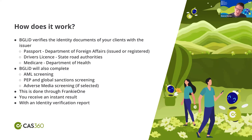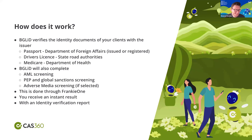BGL-ID goes a little bit further than that, because we've added extra checks that are part of the product. BGL-ID also includes AML screening — we check the AML database to see if there have been any anti-money laundering cases or findings against that particular person. We also do a PEP check (politically exposed persons) and global sanctions as well. So we are doing an AML, PEP and global sanctions screening on each person that goes through BGL-ID.